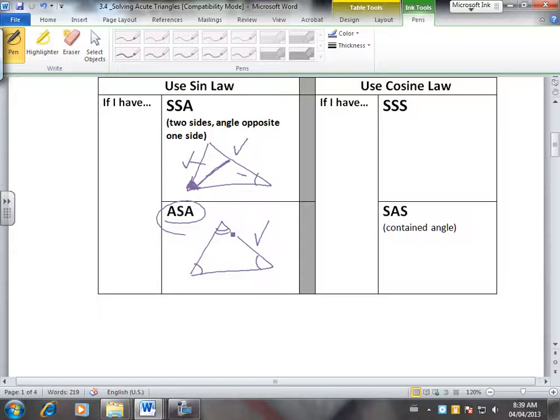If you have a triangle and you're given all three sides, which we call side, side, side, use cosine law. Remember cosine law is the one that would look like A squared equals B squared plus C squared minus 2BC cos A. So if you have all three sides, you'd use cosine law.